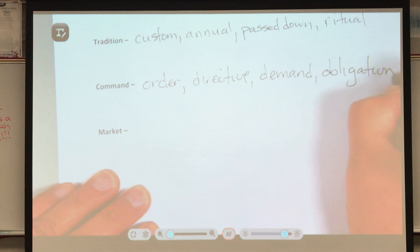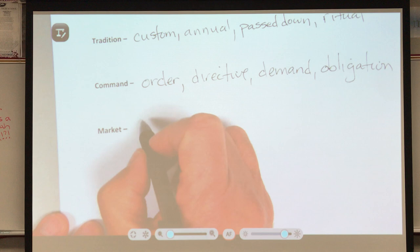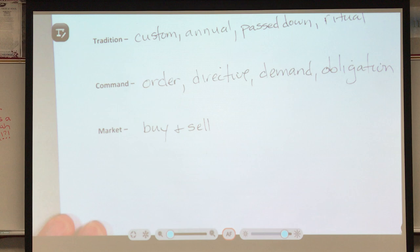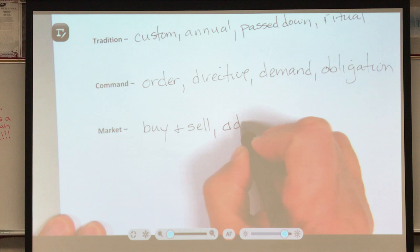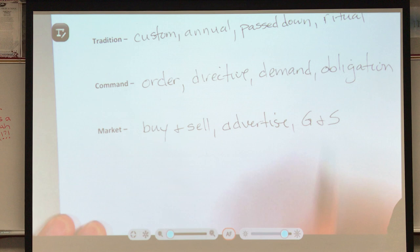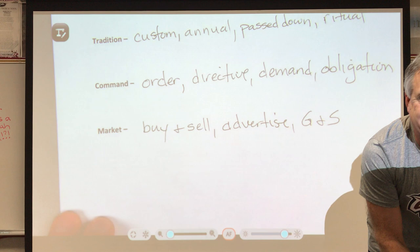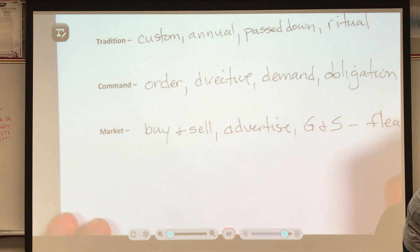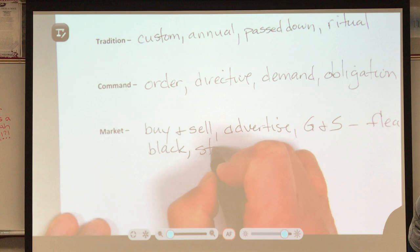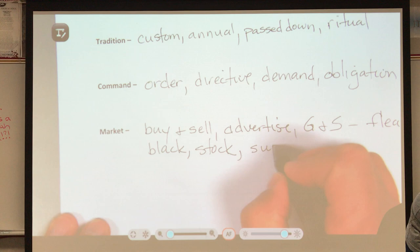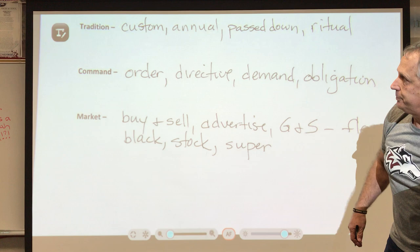The word 'market' is a little bit harder. Students have said a market sometimes is buying and selling — you're buying and selling something. 'Market' can also mean to advertise something. A lot of times goods and services are involved, and students come up with examples like a flea market, the black market, the stock market — which has been very volatile lately with the coronavirus — or a supermarket.